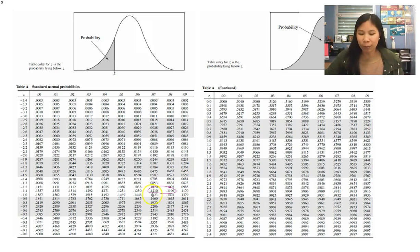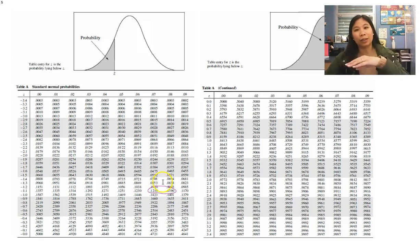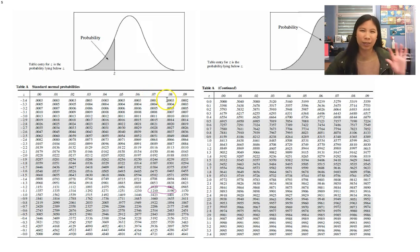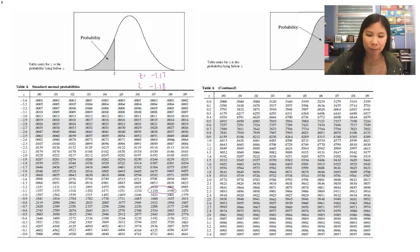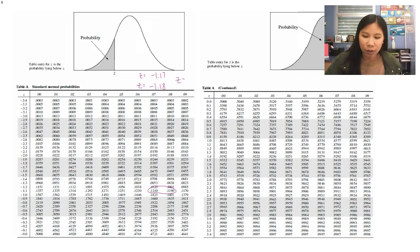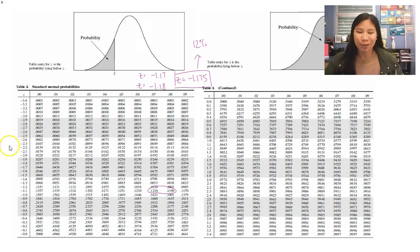To use this table backwards, once we've found the percent, we look at what z-score it corresponds with. Instead of finding the z-score first, we find the percent and then see what z-score matches. That would be negative 1.1-something. We average the 0.07 and 0.08 columns because it's right in the middle — between negative 1.17 and negative 1.18. Finding the average by adding and dividing by 2, our final answer is negative 1.175. That's just an extra example to show how we use this table backwards.